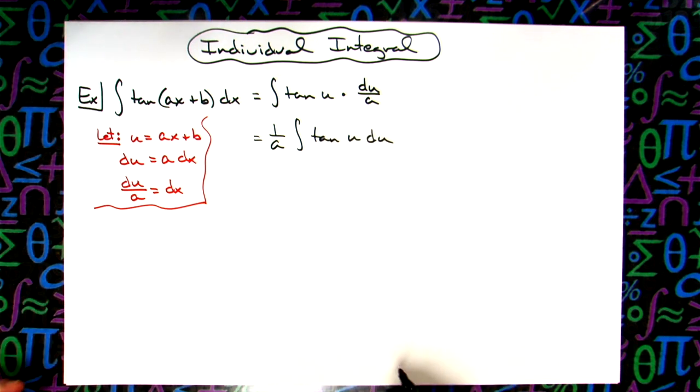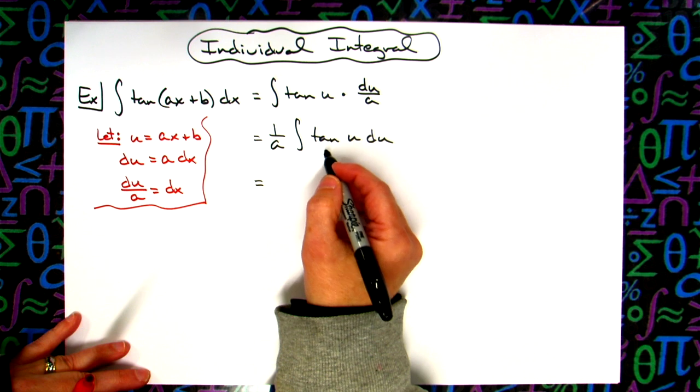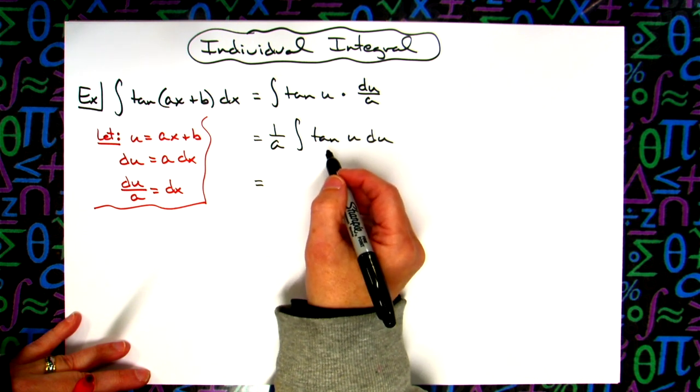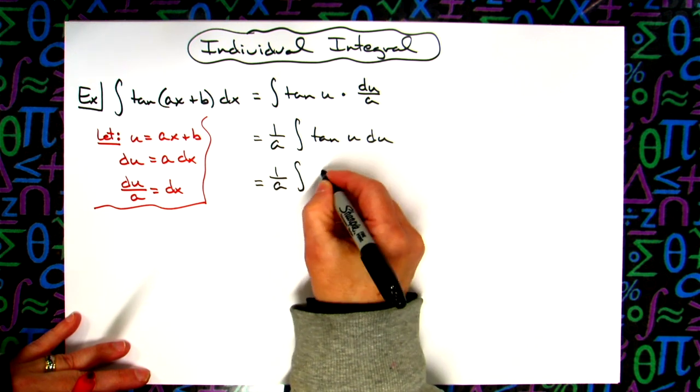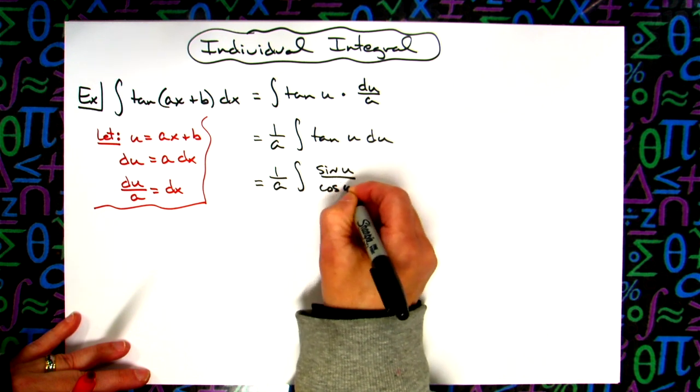Now some people will have this integral memorized, but if you do not, you can work this out. Substitute for tangent with sine over cosine. So we'll have 1 over a times the integral of sine u over cosine u du.